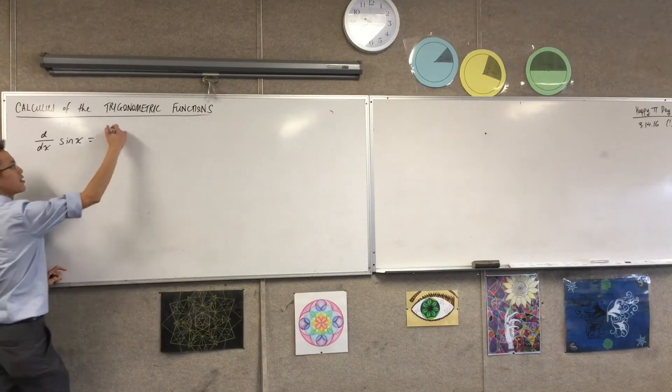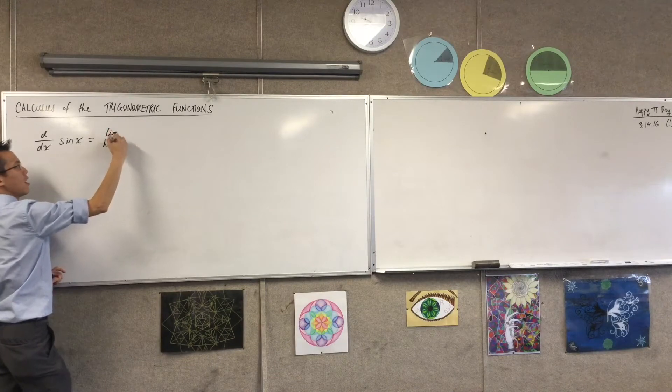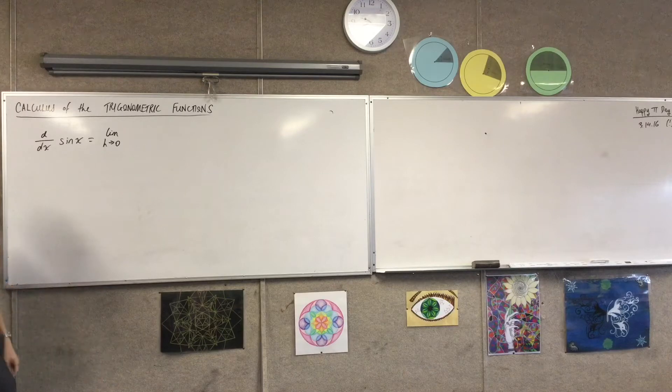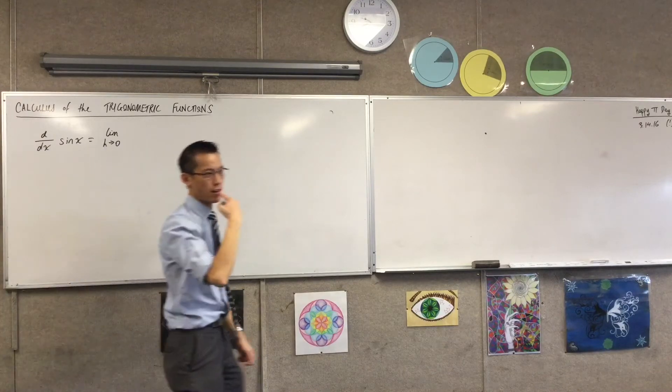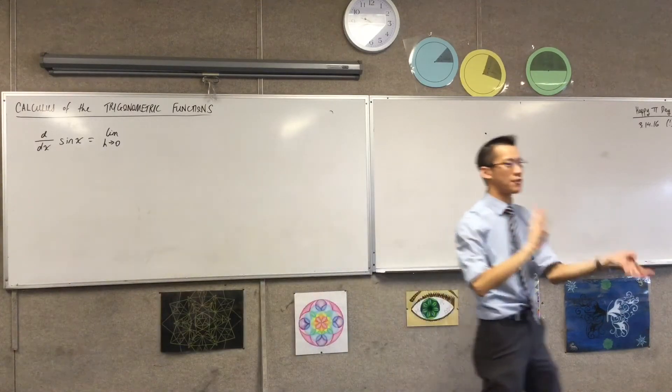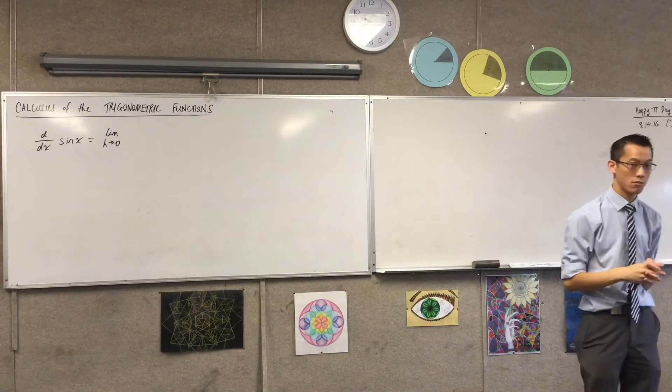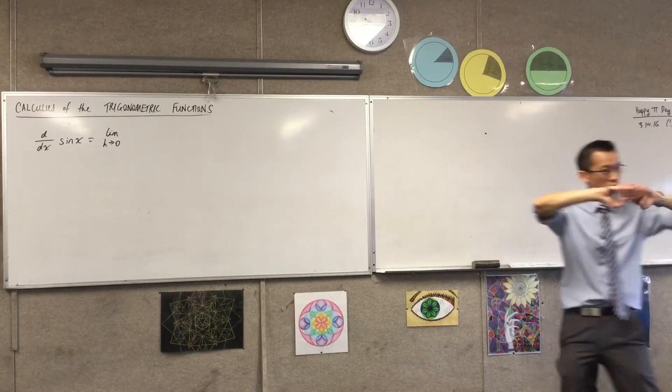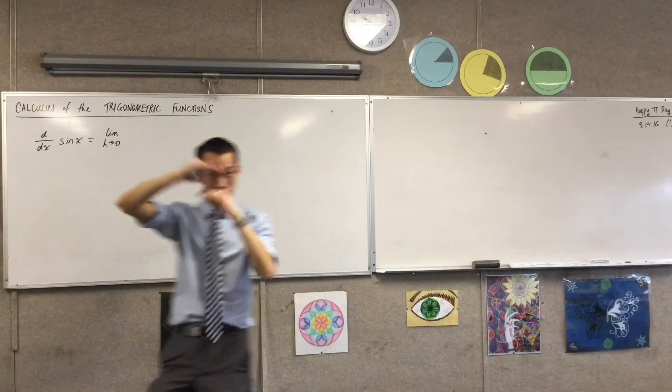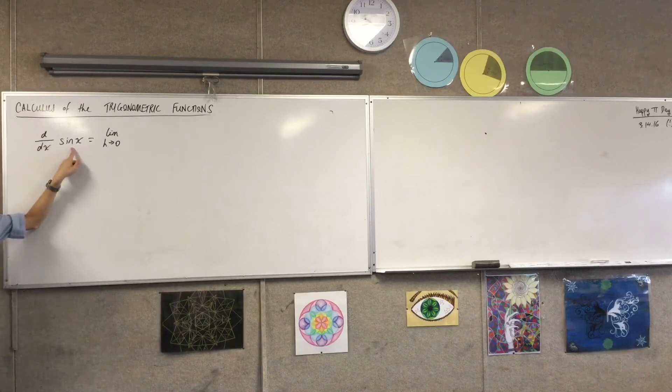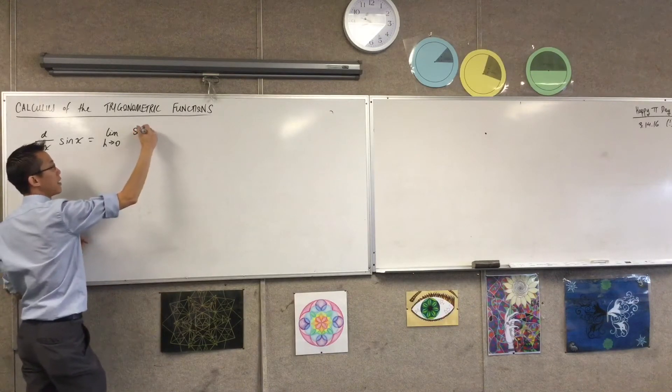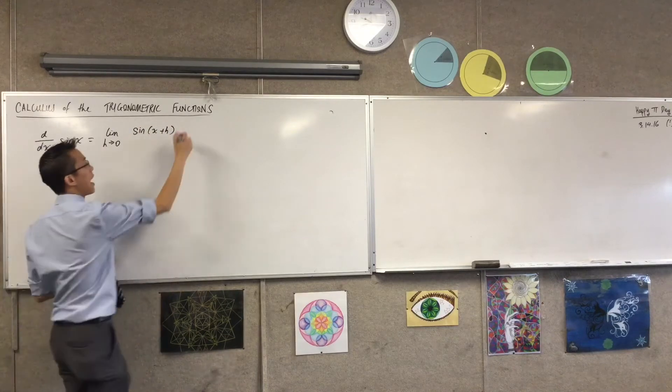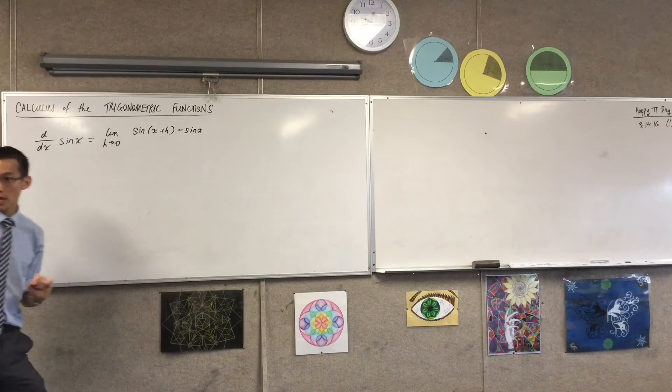So, this thing here is a function. This is my f of x. So, the definition of first principles is the limit as h goes to 0. Now, what's usually on the numerator? We're usually talking in terms of f's, right? So, what's going to be on the numerator? f of x plus h take away f of x. That's your rise, isn't it? But here, I've defined f of x as sine of x. So therefore, on my numerator, there's f of x plus h, and there is f of x.